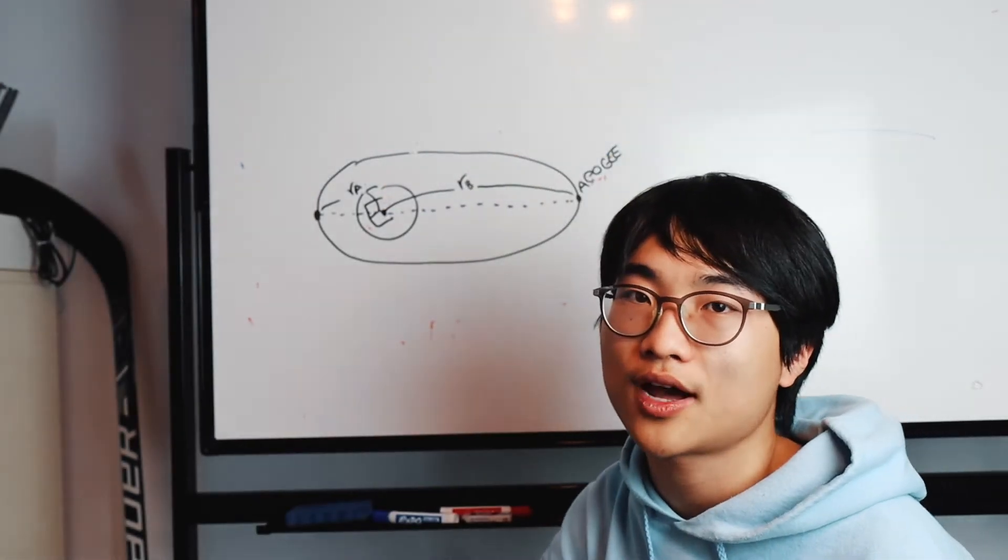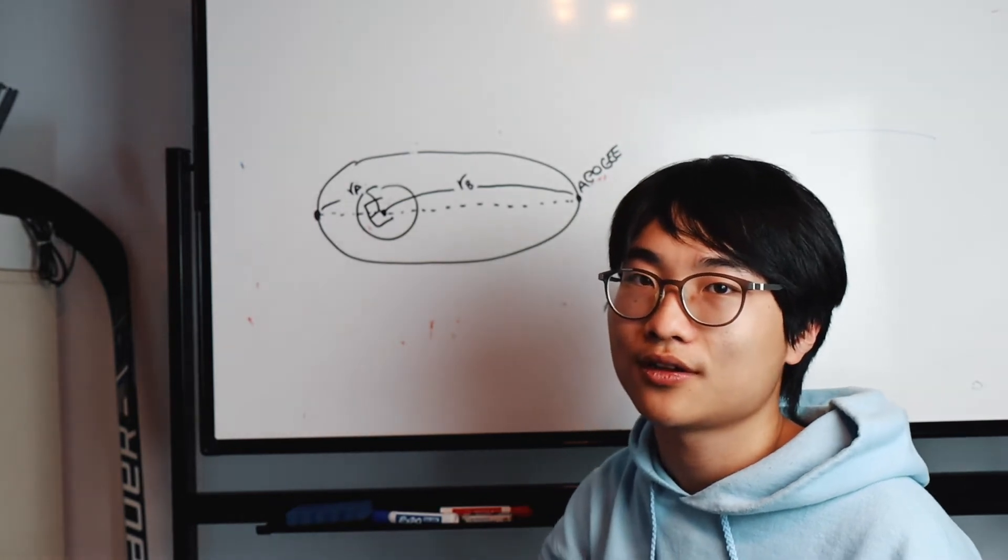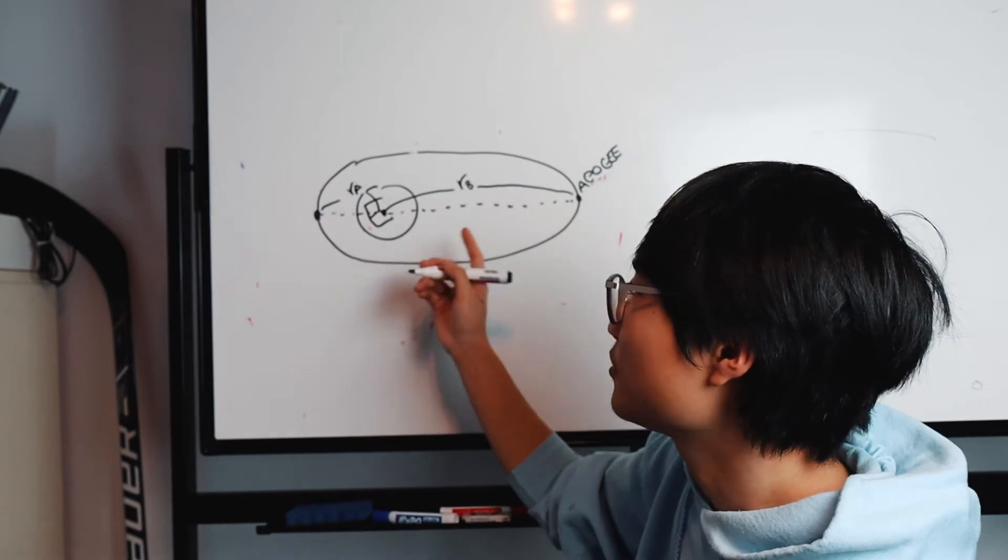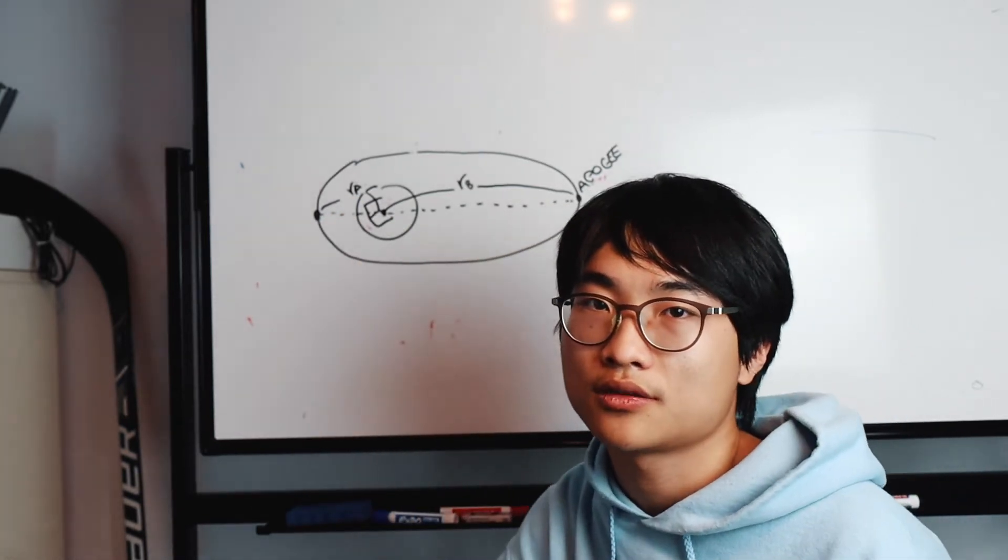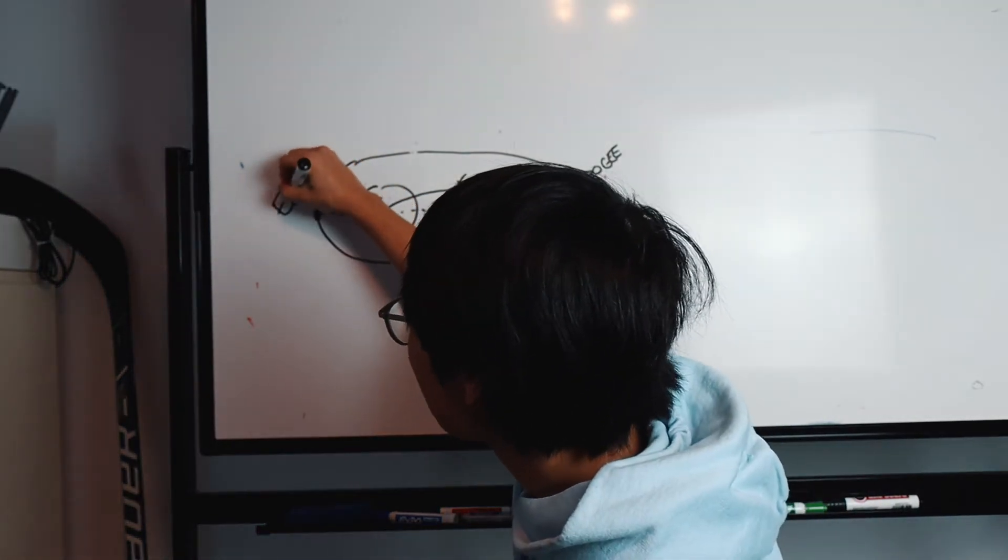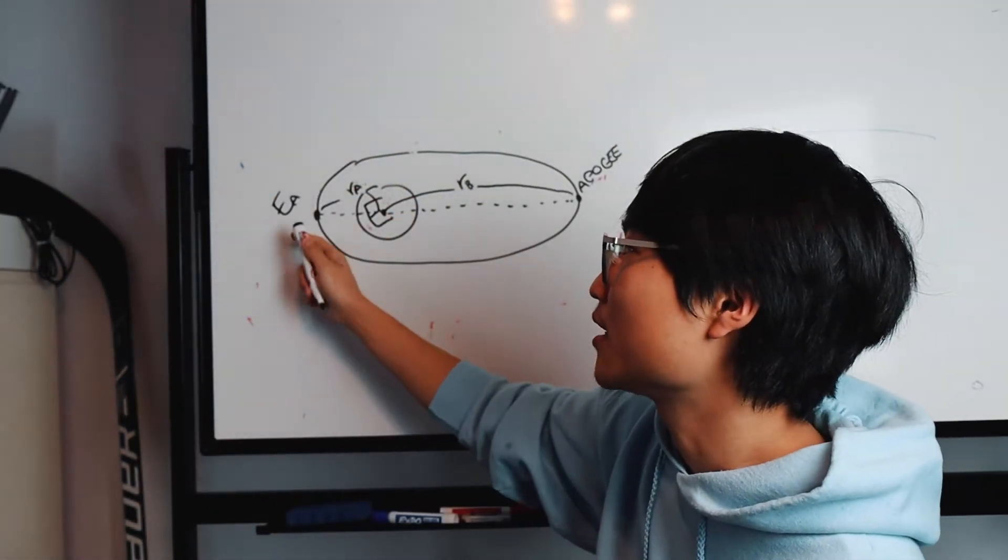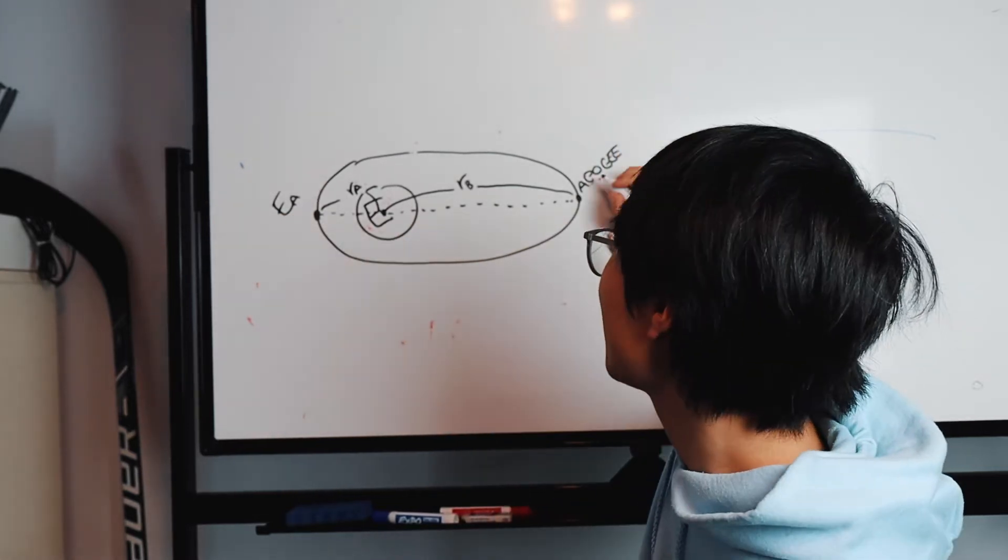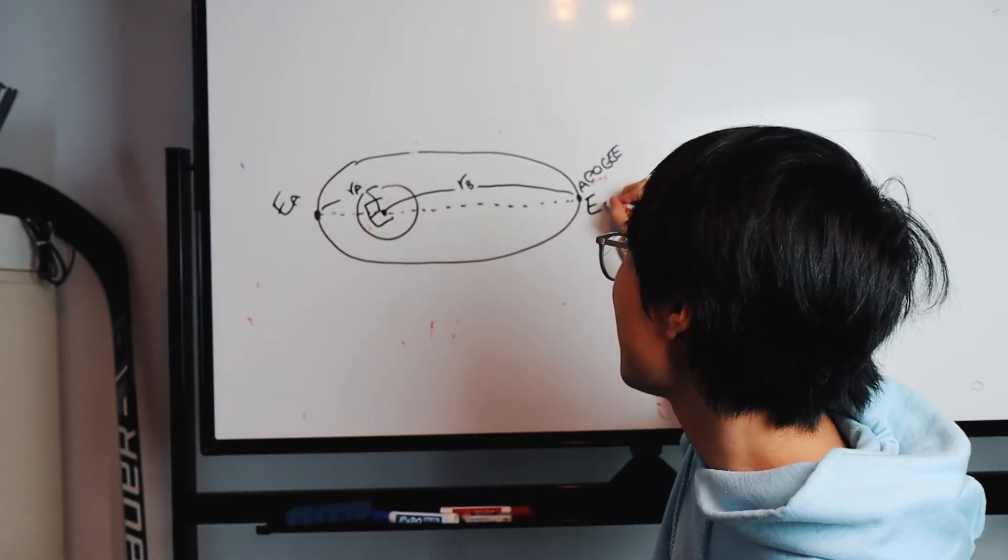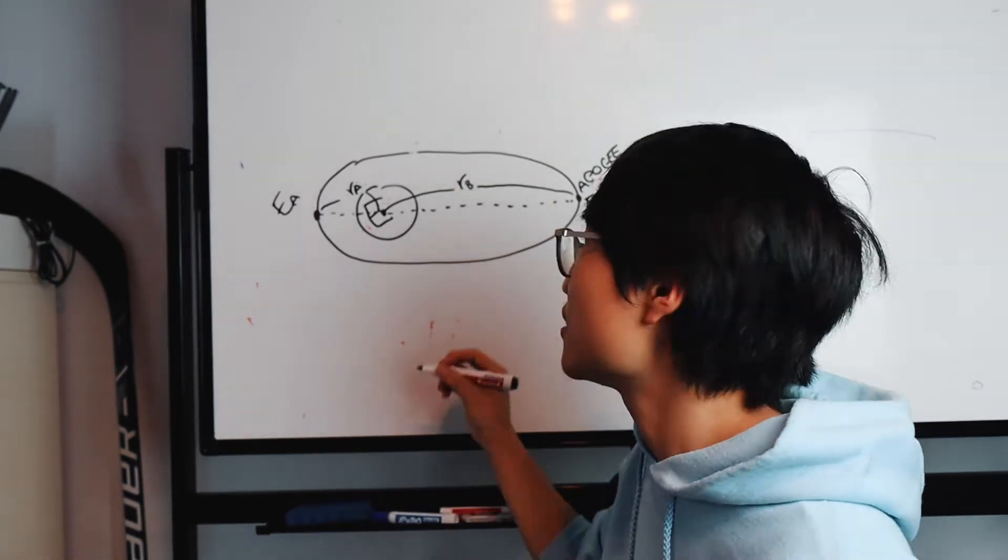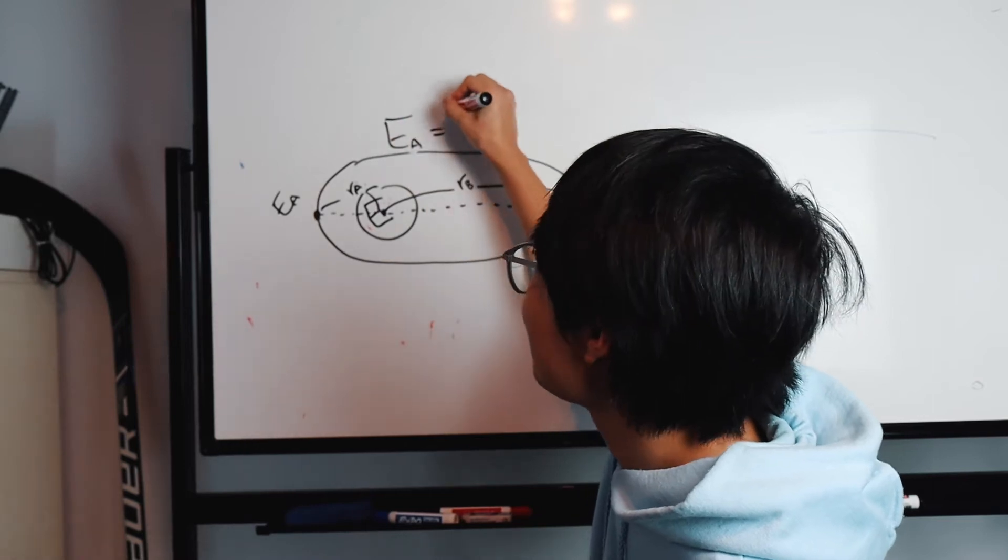The reason why we're not measuring the height will be explained a little later, but measuring the radius of this whole ellipse is more convenient for calculation. At this point, the energy is Ea. When the spacecraft is at the apogee, the energy value is Eb. The whole concept of conservation of energy is by saying Ea equals Eb.